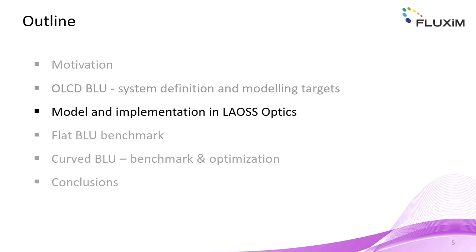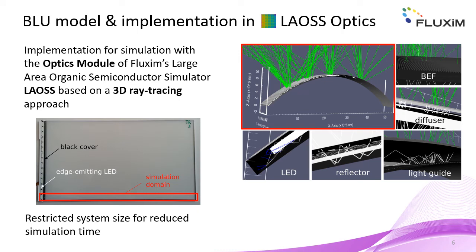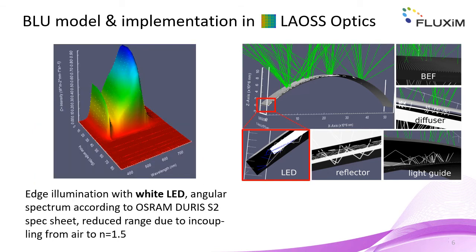Let's now turn to the definition and implementation of the model for the OLCD backlight unit. The full backlight unit is implemented in both flat and curved geometries for simulation with the optics module of Fluxim's large area organic semiconductor simulator Laos, which makes use of a 3D ray tracing algorithm for the modeling of light propagation in complex geometries. As the presence of micron-sized features renders the simulation of large areas excessively time consuming, the simulation domain is restricted to a stripe containing a single LED unit. For the light source, a wide spectrum corresponding to the Osram Duris S2 LED is considered, with appropriate renormalization due to the incoupling from air into the light guide medium with n equal to 1.5, which restricts the angular range of the spectrum inside the light guide plate.